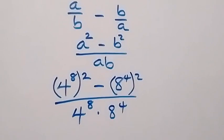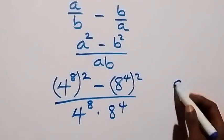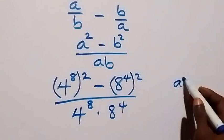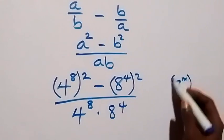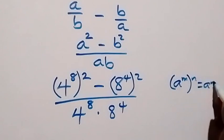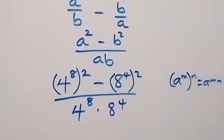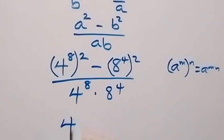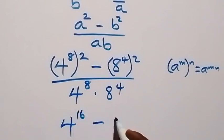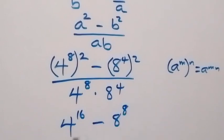From here, we apply the law of indices: a raised to power m, raised to power n, is simply a raised to power mn — so the powers multiply. This gives us 4 raised to power 16, then minus 8 raised to power 8, then divided by 4 raised to power 8 times 8 raised to power 4.